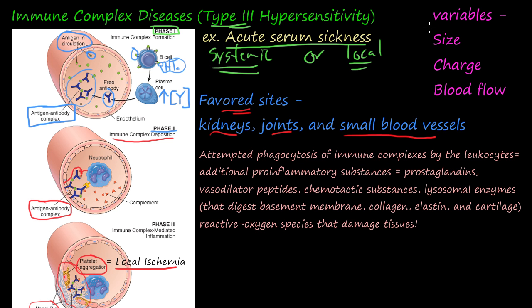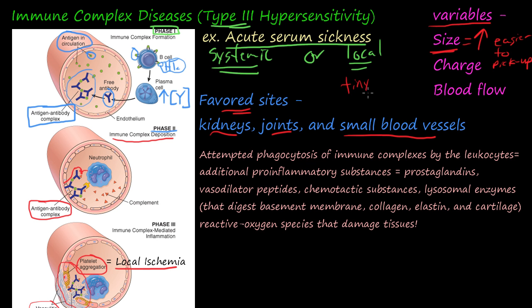There are several variables that determine why complexes embed themselves. One is size. Larger immune complexes are easier for neutrophils to pick up — no problem. But smaller complexes are much harder for neutrophils to clear, so tiny size equals big problem. The smaller they are, the harder it is for neutrophils to pick them up.